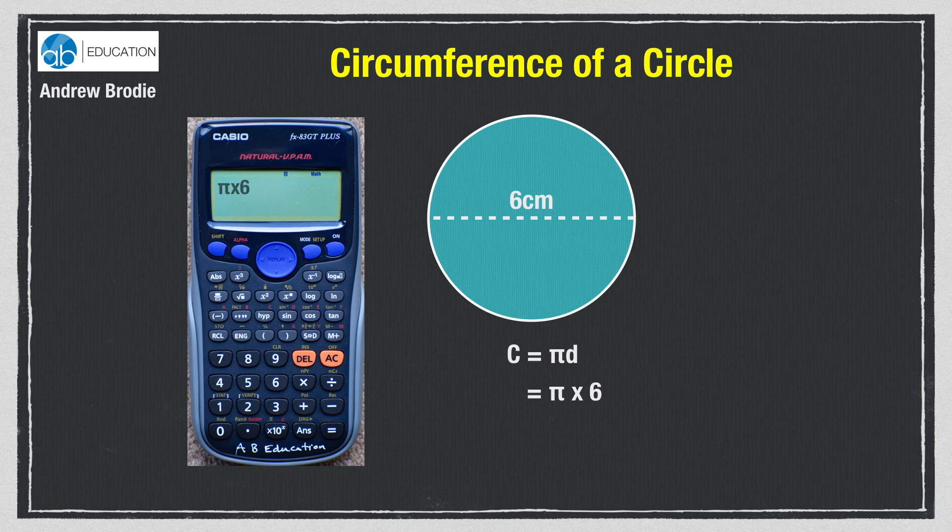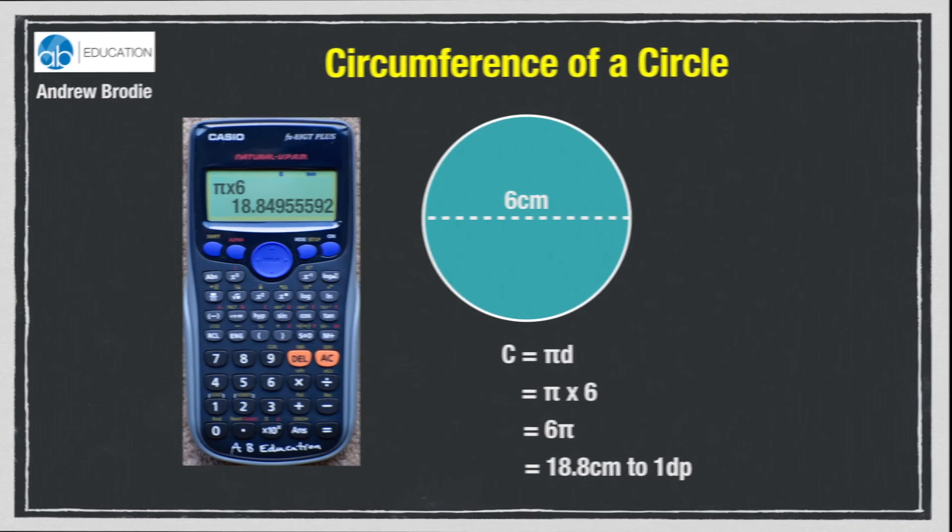Now press times 6 and then the equals sign, and your calculator may show the answer simply as 6π. It is giving the answer in terms of pi. If you press the SD button it will give the answer 18.84955592, which rounds to 18.8 to one decimal place. So the circumference of the circle is 18.8cm to 1dp.